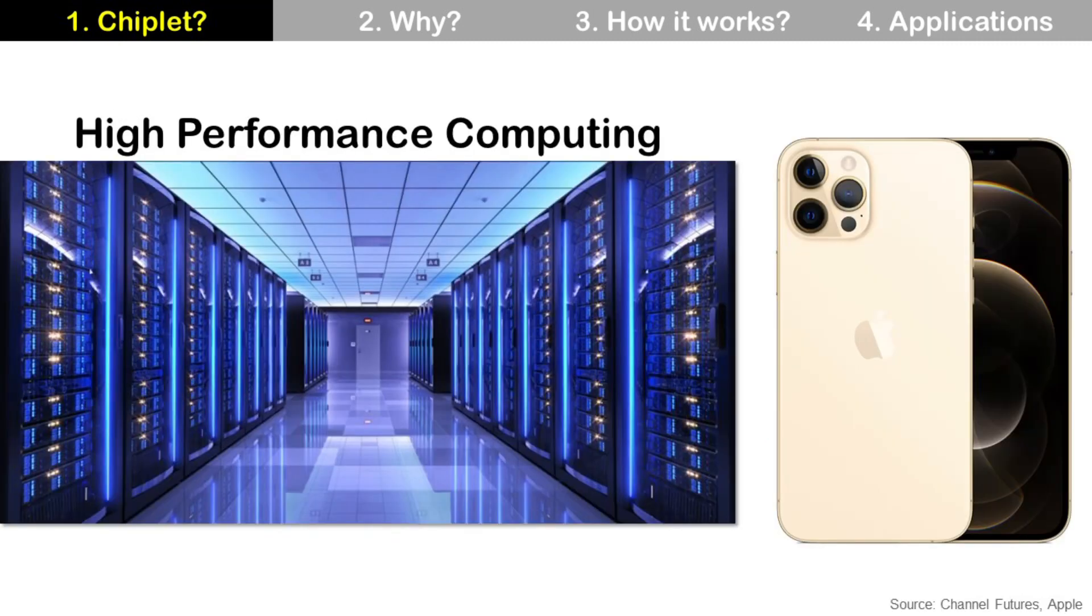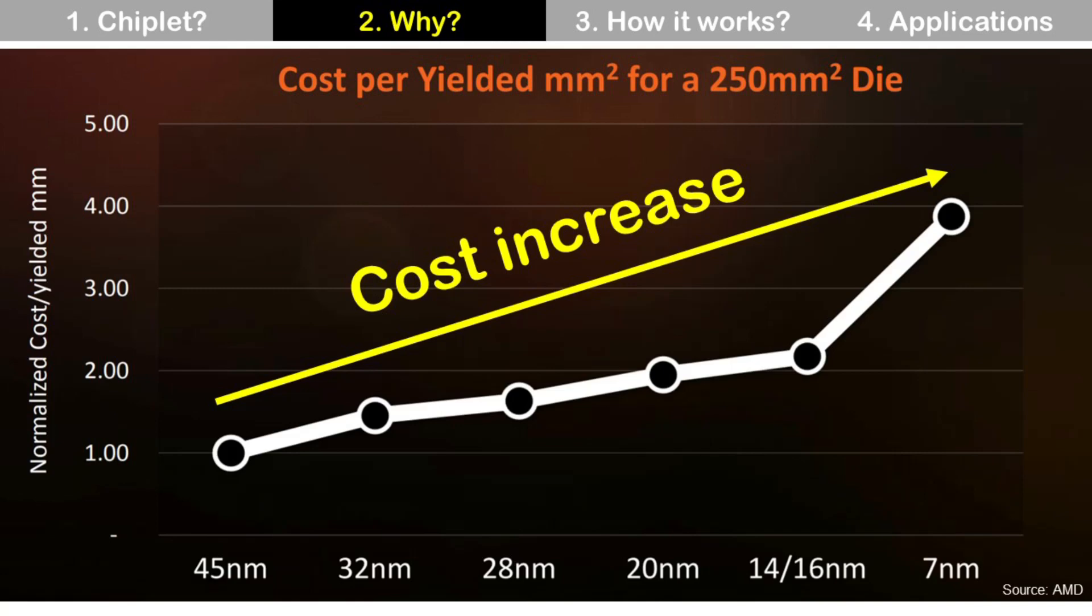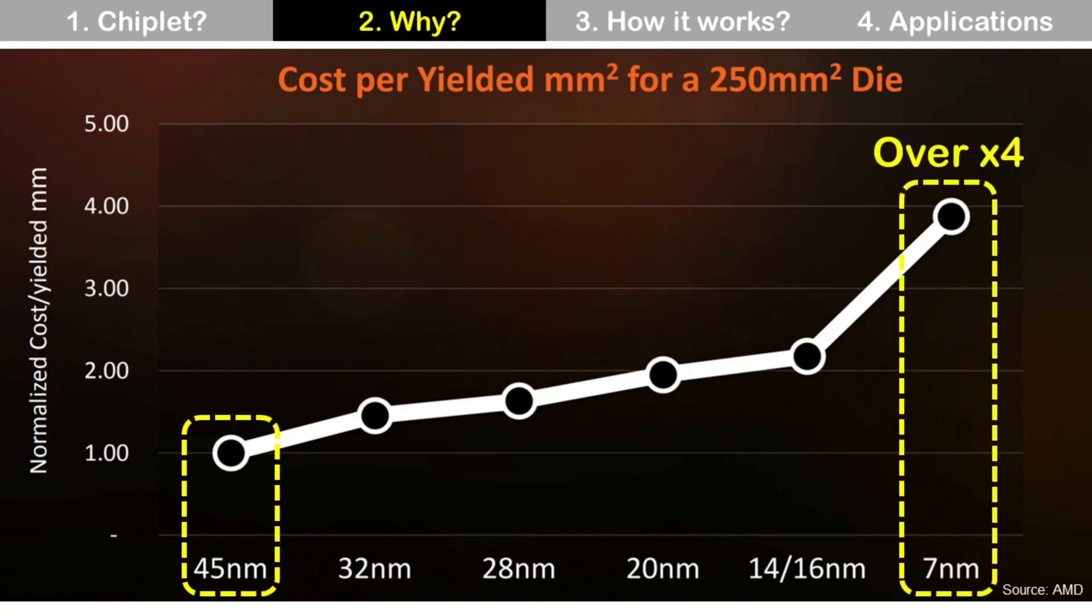So, Chiplet is a good solution for large expensive die which is typically for high performance computing rather than for small die in smartphone. As silicon node of semiconductor advanced like 45nm, 16nm, and even 7nm, cost for large dies continues to increase. Cost for 16nm die with 250 square millimeter size is more than 2 times expensive than 45nm die with same die size. And 7nm die is more than 4 times expensive than 45nm die.